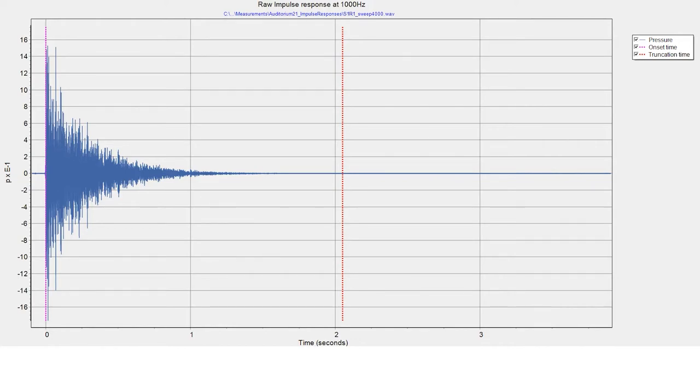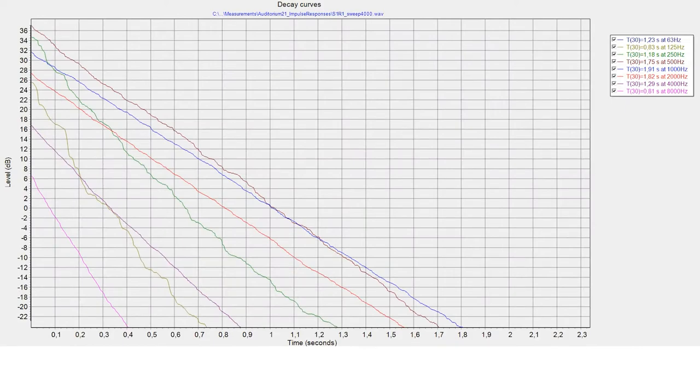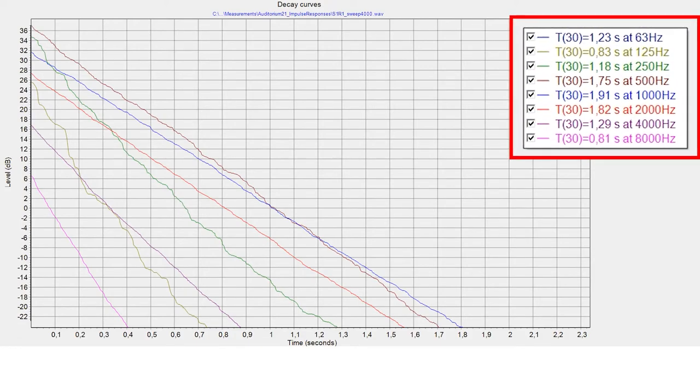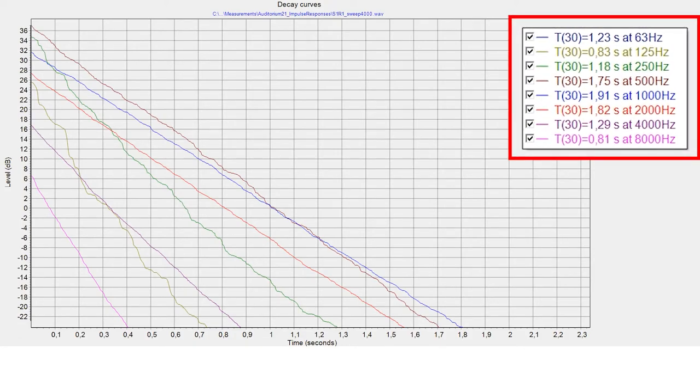From the impulse response, a curve can be calculated of the sound level in the room over time after the impulse, and often this is done for each octave band individually. And from these curves, the acoustic parameters can be derived. This could be the reverberation time, but there are many other acoustic parameters as well that can be calculated from the impulse response.